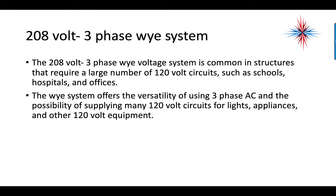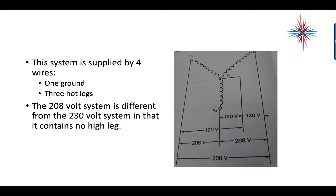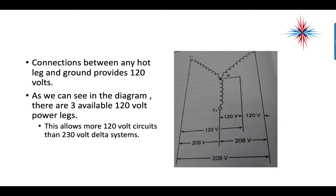The 208-volt three-phase Y voltage system is common in structures that require a large number of 120-volt circuits, such as schools, hospitals, and offices. The Y system offers the versatility of three-phase AC while supplying many 120-volt circuits for lights, appliances, and other lower-voltage equipment. The system is supplied by four wires: three hot legs and one ground. Unlike the delta system, the 208-volt system contains no high leg — all wires are identical in length with respect to neutral. Connections between any hot leg and ground provide 120 volts, allowing more 120-volt circuits than the 230-volt delta system.